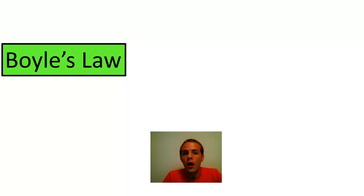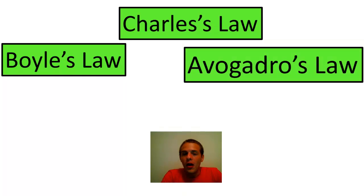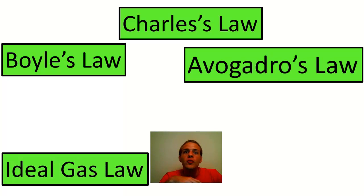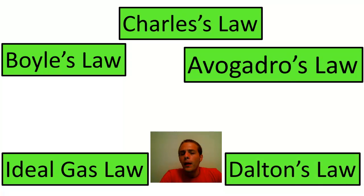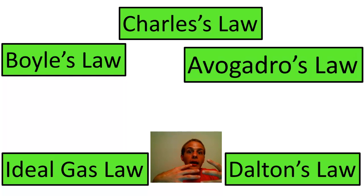For instance, we learned about Boyle's law, which governs the relationship between volume and the pressure of the gas, assuming you have a constant temperature and a constant amount. We've also talked about Charles's law, which governs the relationship between volume and temperature if you keep the amount and the pressure constant. We've talked about Avogadro's law, which governs the relationship between the amount of the gas and that gas's volume, assuming a constant temperature and pressure. We've talked about the ideal gas law, which is basically just a summation of those three gas laws. And finally, we've discussed Dalton's law of partial pressures, which says that when you have a mixture of gases, the total pressure of that container is going to be equivalent to the sum of the individual partial pressures that each component exerts on the container.